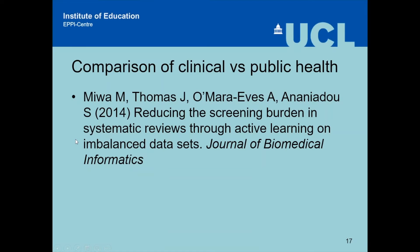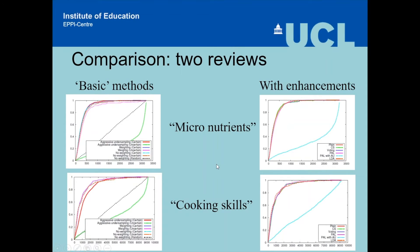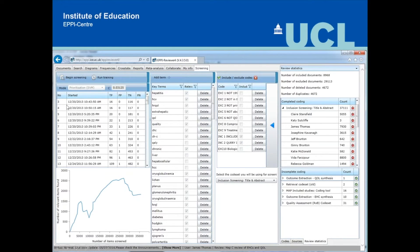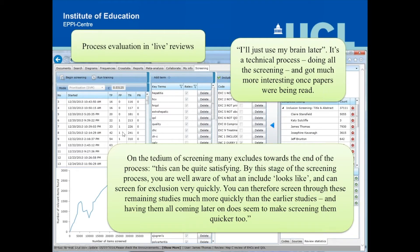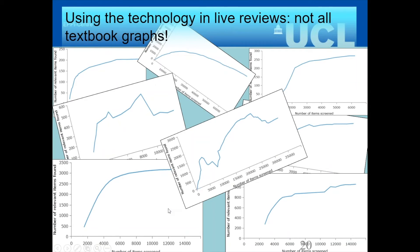There are some papers available on this. We've done comparisons of clinical areas with public health, and with a few enhancements you can get public health working pretty well. We've also done work looking at live reviews as a process evaluation — essentially looking at whether screening behaviour changes when this technology is working in the background. It looks as though it's safe to use in terms of behaviour change, though more research is always needed. Sometimes in live reviews you don't get textbook graphs because people organise their screening differently, but that doesn't mean the machine isn't working well.